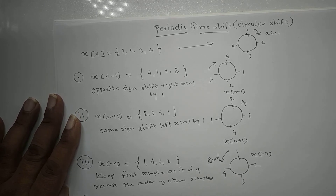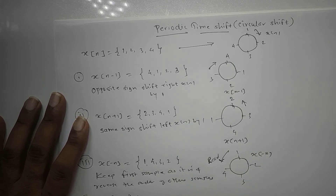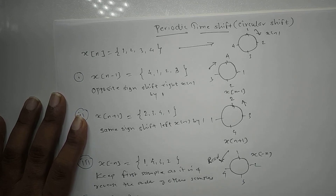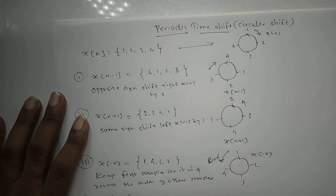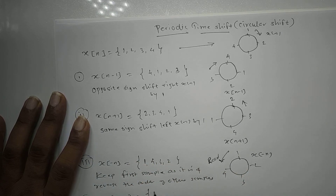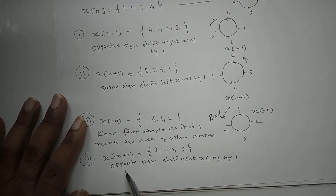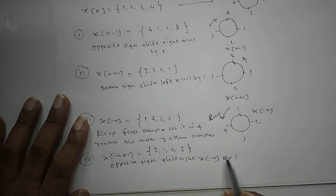For x[-n+1]: n has minus sign and constant has plus sign - opposite signs. Opposite sign means shift right. So we shift x[-n] right by 1. x[-n] = {1, 4, 3, 2}, and shifting right by 1 gives {2, 1, 4, 3}. So x[-n+1] = {2, 1, 4, 3}.